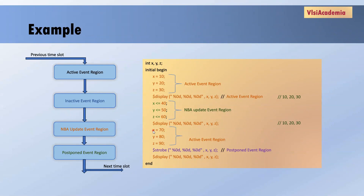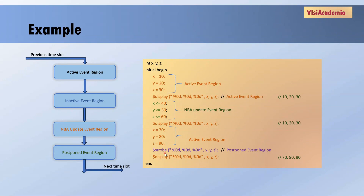Now it moves to the next blocking assignment where X, Y, Z are assigned with 70, 80, 90. The next active event region is $display, so it will execute before $strobe and print 70, 80, and 90. Now the simulator moves to the NBA update event region, where it assigns X, Y, Z to 40, 50, and 60. So the latest value of X, Y, Z at the end of the simulation time step is 40, 50, 60. Then $strobe, which comes under the postponed event region, will be executed, and since the latest value of X, Y, Z is 40, 50, 60 — $strobe will print 40, 50, 60.